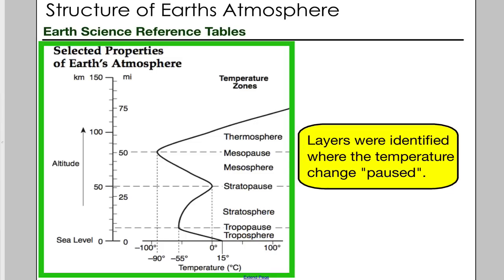Earth's atmosphere is divided into four major layers. Those layers are listed here on the reference table as the troposphere, stratosphere, mesosphere, and thermosphere.